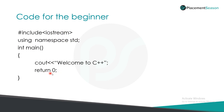After that we have the return zero statement which is common in all the programs. Every program execution once successful returns a zero. If not it returns a one. So usually you have a return zero statement in all the programs for indicating successful execution.